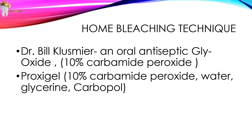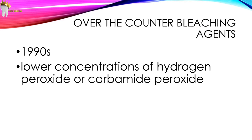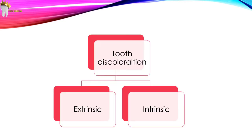After this success, Proxigel — a mixture of 10% carbamide peroxide, water, glycerine, and carbopol — was marketed and replaced Glyoxide for orthodontic patients because of its slow release of carbamide peroxide. Over-the-counter bleaching agents were first launched in the United States in the 1990s, sold directly to people for home use, and they contained lower concentrations of hydrogen peroxide or carbamide peroxide.